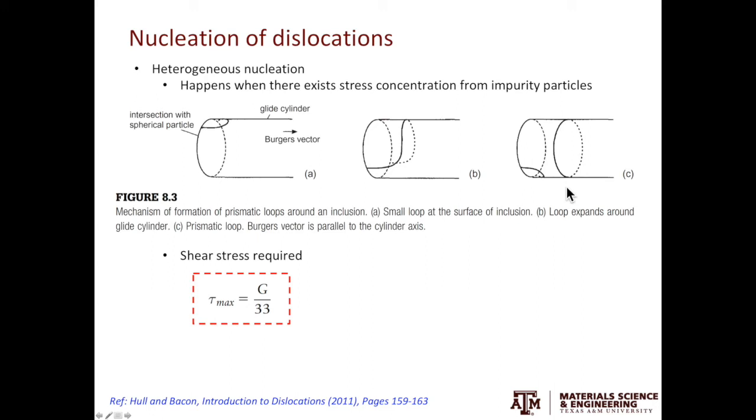The stress level to activate heterogeneous nucleation of dislocations is estimated to be G over 33. Let's again use aluminum as the example. The shear modulus G of aluminum is about 25 gigapascal. Then 25 divided by 33 gives us about 0.8 gigapascal. This again is much larger than the 0.01 gigapascal people have observed in experiments. Hence, the heterogeneous nucleation model of dislocations cannot explain the large number of dislocations after deformation as well.